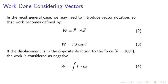Work done considering vectors. In the most general case, we may need to introduce vector notation so that work becomes defined by work equals F dot product D or simply work equals FD cosine theta, where theta is the angle between F and D. If the displacement is in the opposite direction, the work is considered negative.